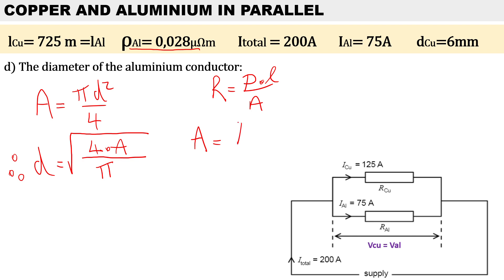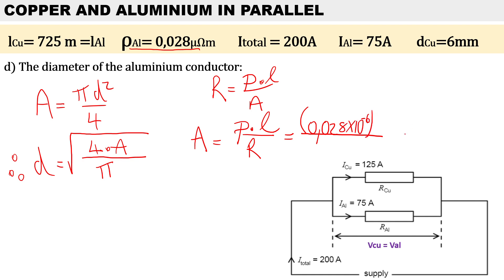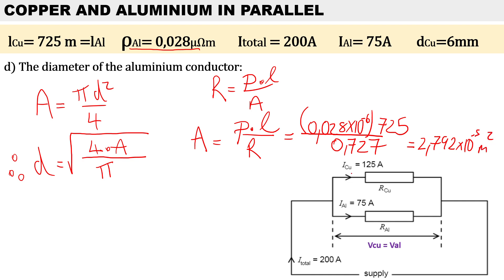To calculate the area, we manipulate the resistance equation: area equals resistivity for aluminium multiplied by the length of aluminium, divided by the resistance for aluminium. Don't forget to convert micro-ohm-meters to ohm-meters by multiplying by 10 to the power of minus 6. The cable length is 725 meters and the resistance is 0.727 ohms. Therefore the area is 2.792 times 10 to the minus 5 meters squared.